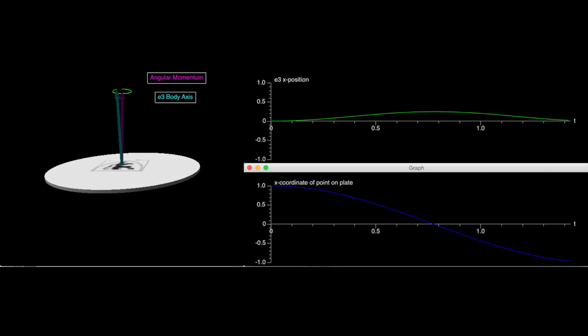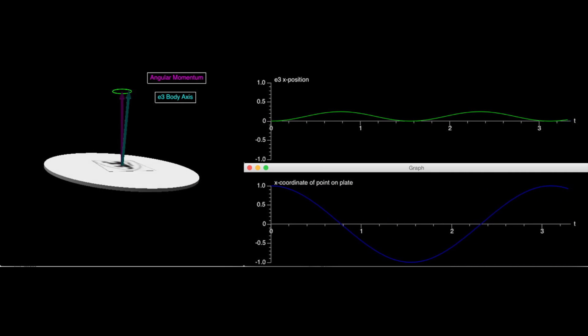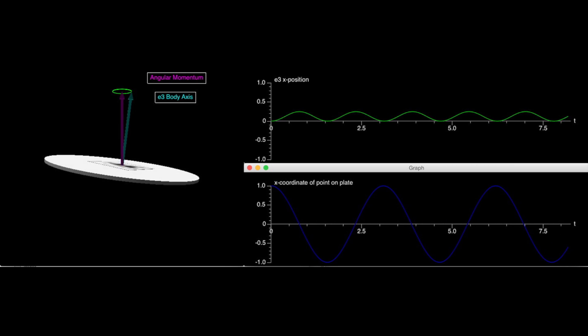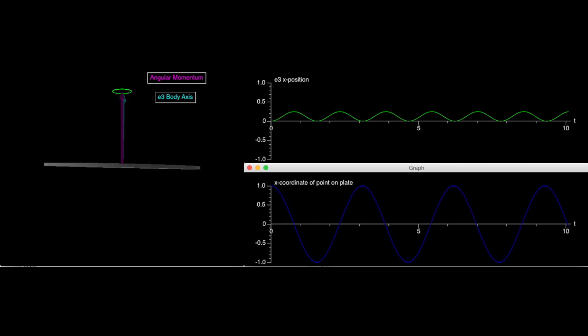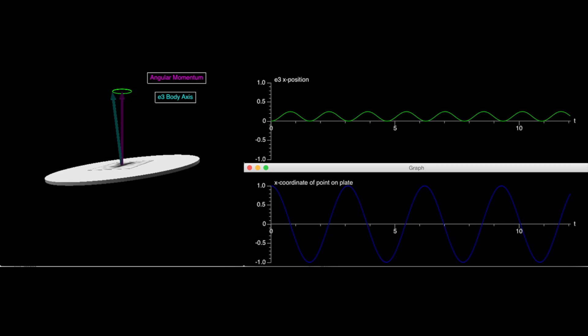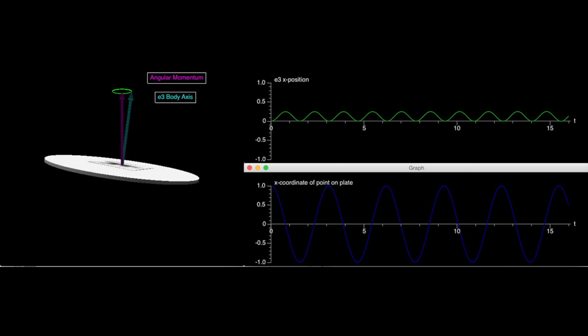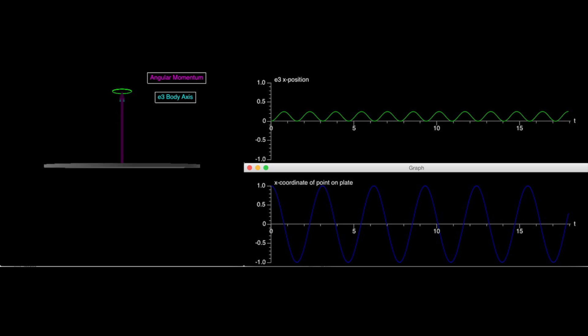But enough math, let's look at a simulation of this. Here, I have created a program that uses the Euler equations presented earlier to model the motion of the plate. Using the Euler equations, we can solve for the rate of change of the principal axes with time. Then, using that rate of change, we can step through time in small increments translating the angular velocity in the body frame to the space frame, thus showing how the orientation of the disk changes with time.